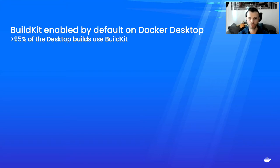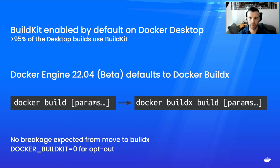As we are closing in on migrating all our builds to BuildKit, we have some news. About a year ago, we switched all Docker Desktop products to use BuildKit by default, with over 95% of builds from Docker Desktop now using BuildKit. In Linux packages, you previously needed to set DOCKER_BUILDKIT=1 to opt in — that pain is now over. In Docker 22.04 beta, no opt-in is required; the default build experience will be powered by Docker BuildX, and typing `docker build` will internally redirect to `docker buildx build`.